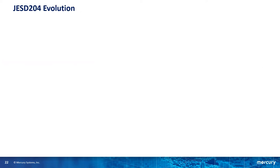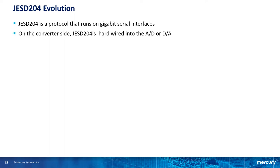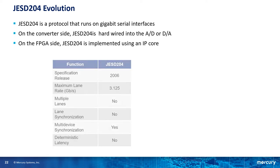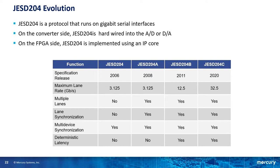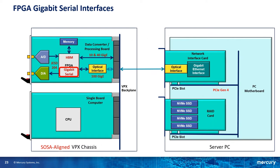So let's take a look at JESD204. JESD204 runs on gigabit serial interfaces. On the converter side, it's hardwired into the A to D or D to A converter chip. On the FPGA side, it's implemented using an IP core. JESD204 isn't new — it was first released in 2006 — but with each new update, new features have been added and the speed of the serial interfaces has gotten faster, to where now we support 32.5 gigabits per second, which in turn allows faster sample rates on the converters. The JESD204 interface on the converters needs to connect to the gigabit serial interfaces on the FPGA.